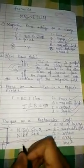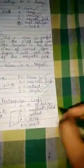NIBA sine theta, or NIBA sine theta. Magnetic field, I is current, A is area, and theta is the angle. Okay friends.